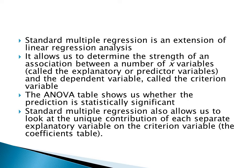Standard multiple regression is an extension of linear regression analysis, which we spoke about last chapter. It allows us to determine the strength of the association between a number of variables — also called explanatory or predictor variables — and the dependent variable, called the criterion variable. An ANOVA table can show us statistical significance. If we see statistical significance, we can make a prediction that the same variables in another group will yield the same result.